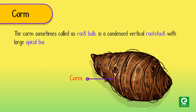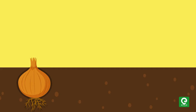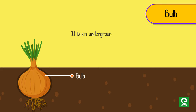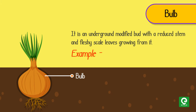Corm: sometimes called a root bulb, it is a condensed vertical rootstock with large apical buds. Adventitious roots may grow either from the base or all over its body. Example: gladioli. Bulb: an underground modified bud with a reduced stem and fleshy scale leaves growing from it. Examples: onion and garlic. This covers the different types of stem modifications.